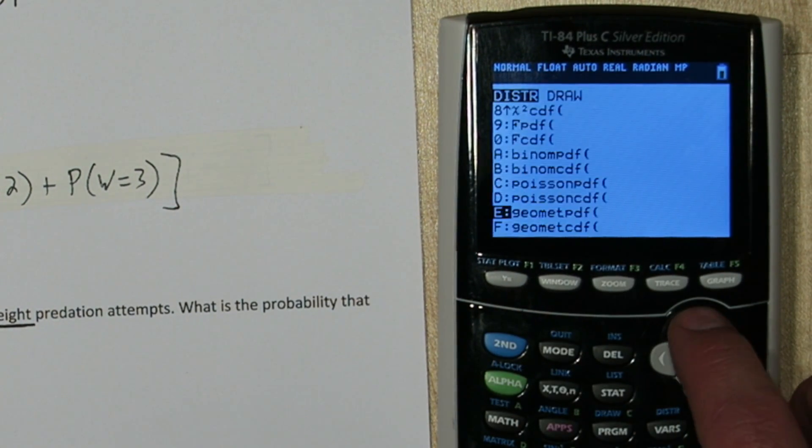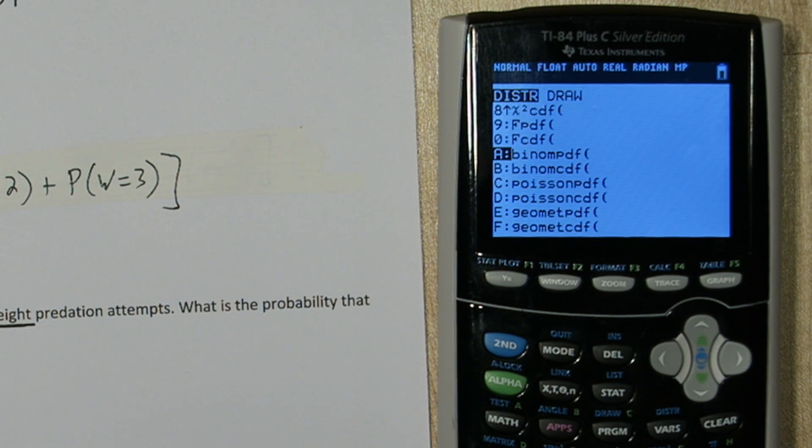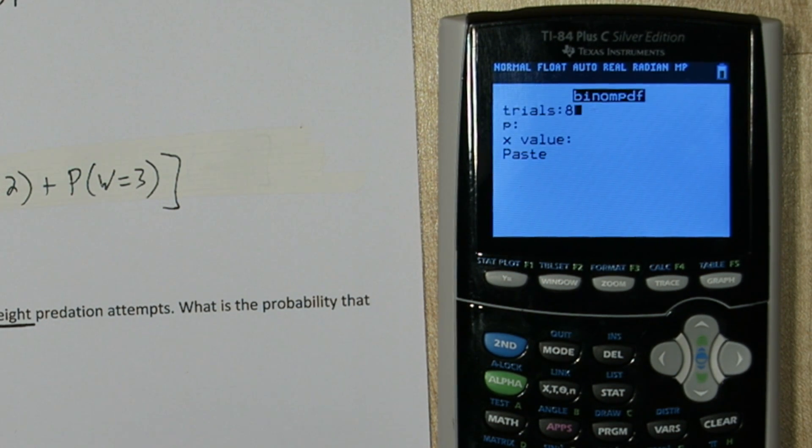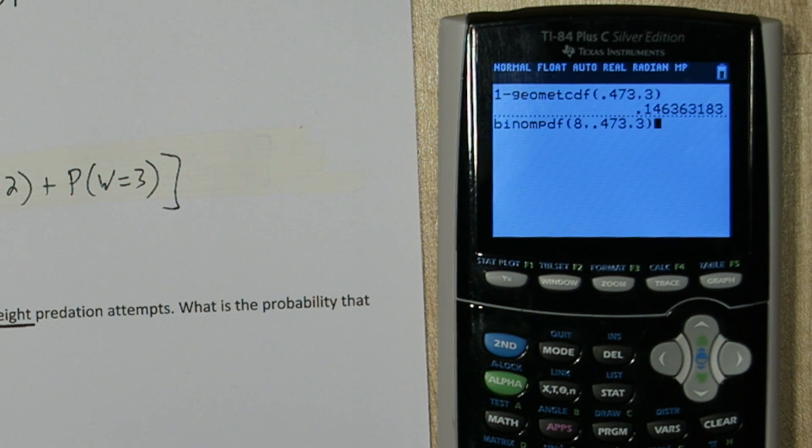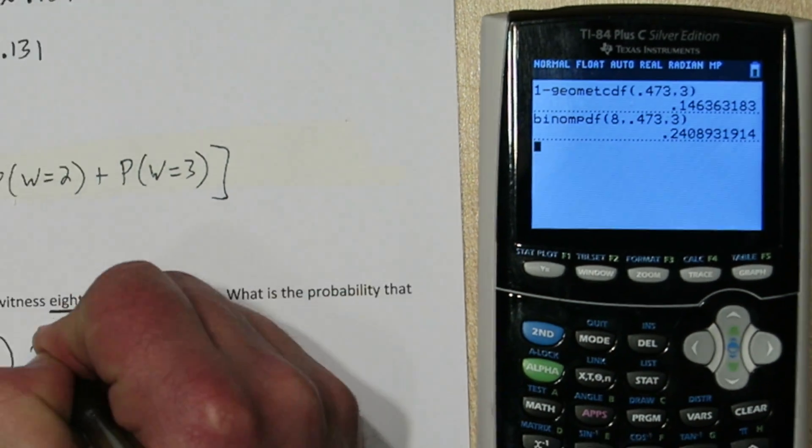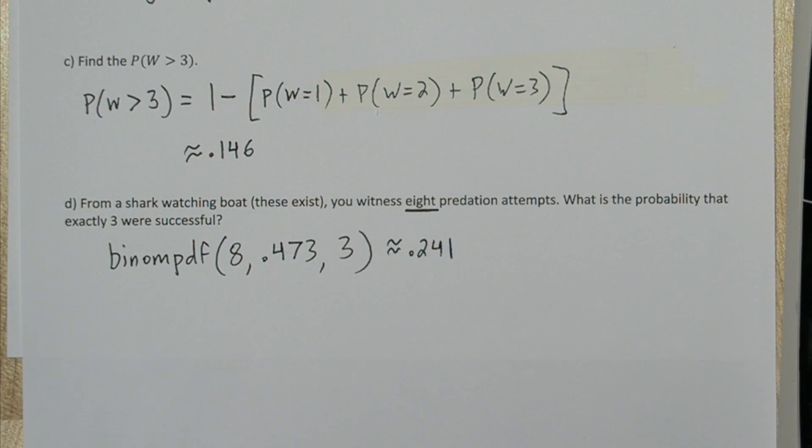Press 2nd VARS and go down to Binome PDF. For number of trials put eight, and probability of success .473, and for x value choose three. So the probability of witnessing exactly three successes out of eight predation attempts is about .241.